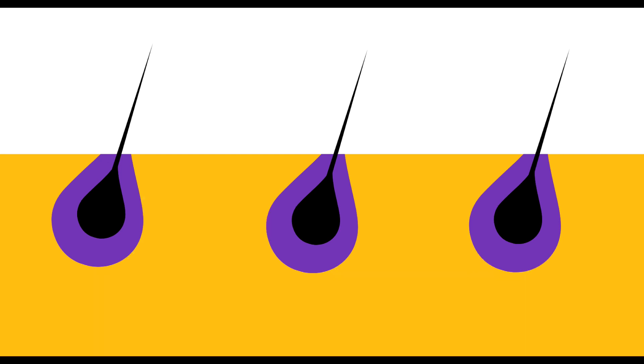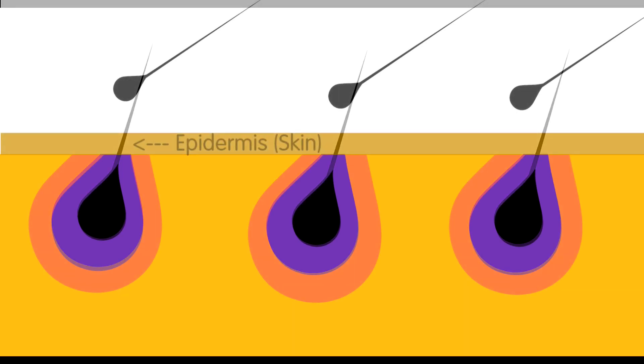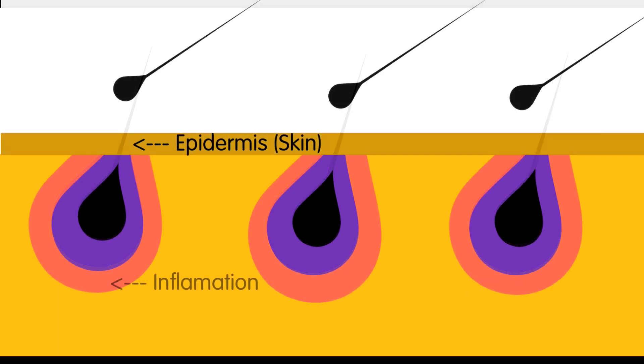When you don't have the white blood cells coming and nourishing that, your epidermis closes up over the top of your hair follicle, and that's why you don't see the hair coming out.